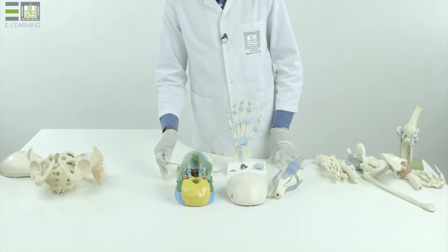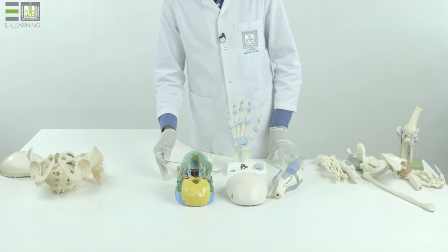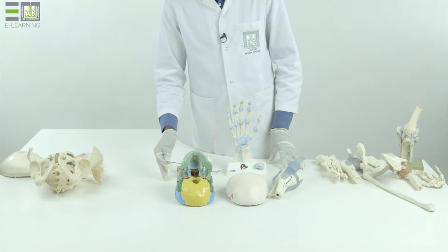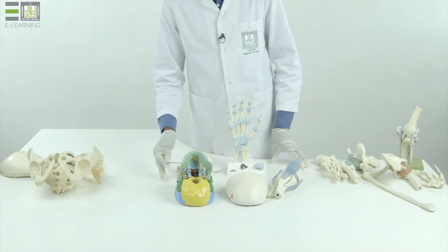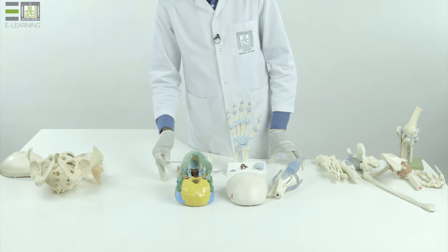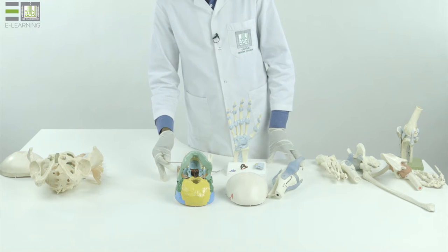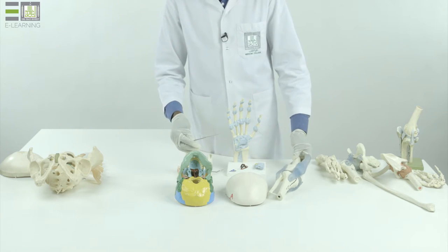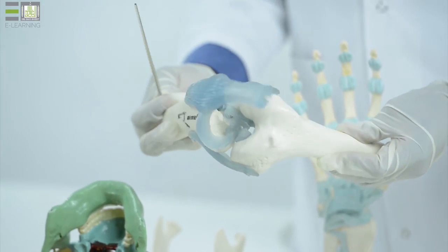The fibrous are the more fixed type of joints, the cartilaginous have limited movement, and the synovial have freedom of movement. This is an example of one of the joints within our body.